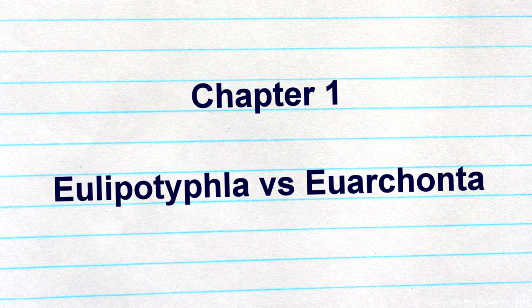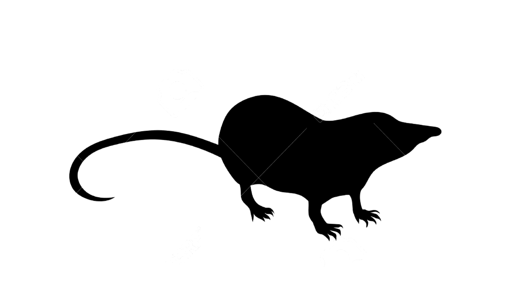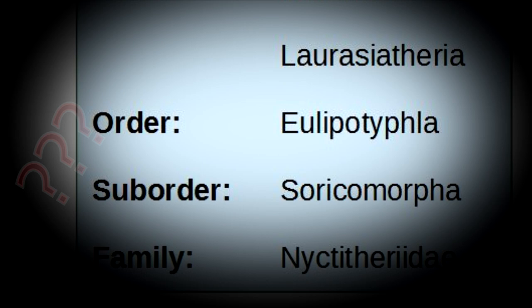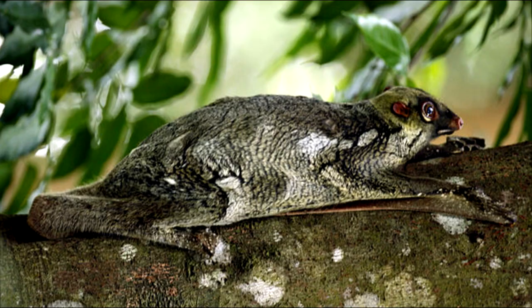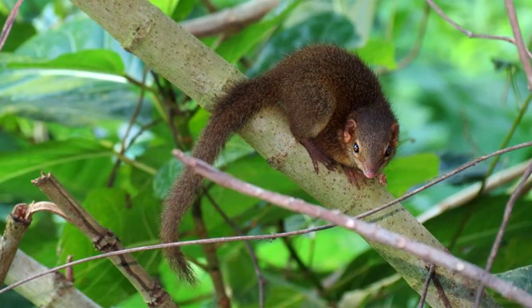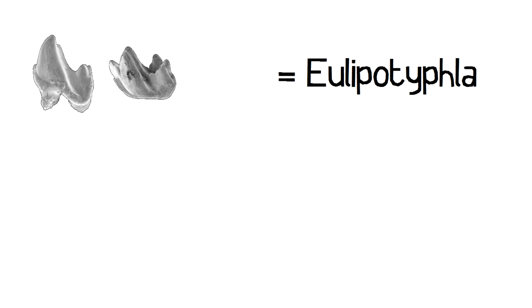After this basic information, we will dive deeper into the topic by looking at a few scientific papers, divided into three chapters. Chapter 1: Eulipotyphla vs. Euarchonta. We already learned that Nyctytheriidae belongs to Eulipotyphla, along with hedgehogs, moles, shrews, and so on — but is this really proven? There is a paper by Carly L. Menz et alii in which the central question is whether nyctytheriids are more related to Euarchonta instead — that is, primates, colugos, and tree shrews.